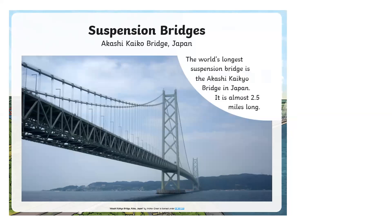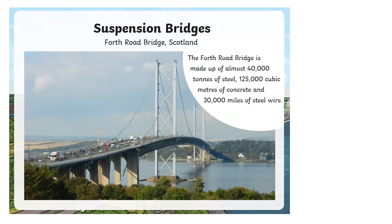The bridge you saw at the beginning is the world's longest suspension bridge — the Akashi Kaikyō Bridge in Japan — and it is almost 2.5 miles long. The other bridge from the beginning is the Forth Road Bridge in Scotland, which is made up of almost 40,000 tons of steel, 125,000 cubic metres of concrete, and 30,000 miles of steel wire. You can imagine that costs a lot of money to make.